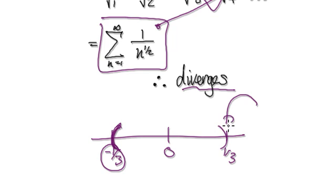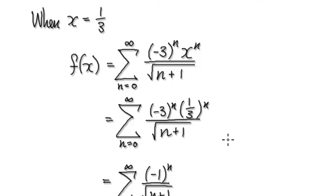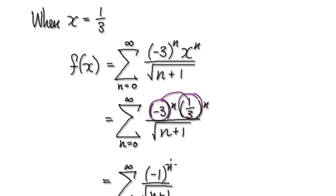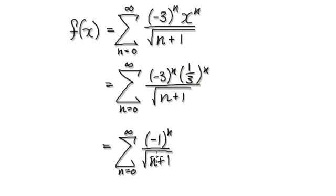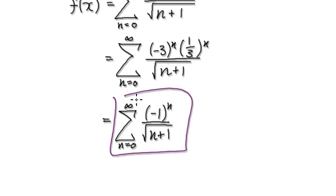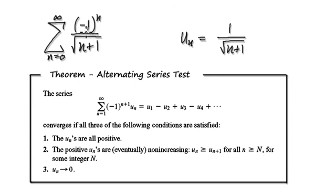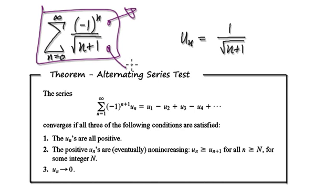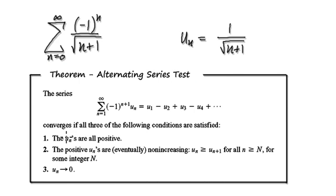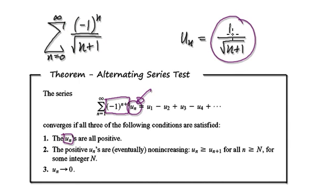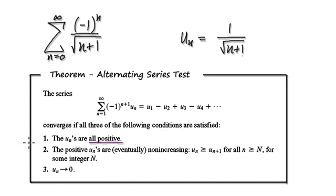Now we need to consider what happens when x is dead on a third. Putting x equals a third into the series gives us negative one to the power of n, so this is an alternating series. We're going to use the alternating series test. Extract your u_n — discard the (-1)^n part and just extract u_n — which gives us one over the square root of n+1. All u_n values are positive, and as n heads to infinity this is always positive, so condition one is met.